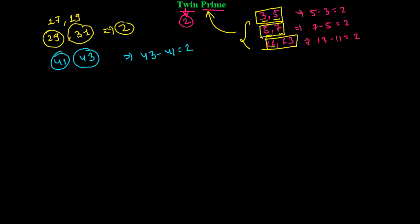Or, in another way also, you can interpret this, like, 41 is the twin prime of 43, alright. Or, similarly, you can say, like, 43 is the twin prime of 41, alright. Similarly, here you can say, like, 11 is the twin prime of 13, or 13 is the twin prime of 11, like that you can do.